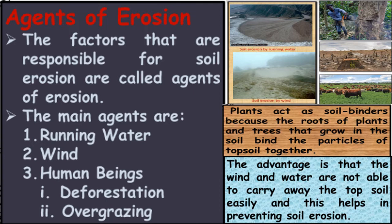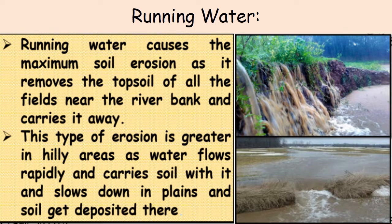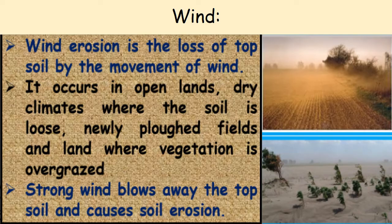Running Water. Running water causes the maximum soil erosion as it removes the topsoil of all the fields near the river bank and carries it away. This type of erosion is greater in hilly areas as water flows rapidly and carries soil with it, and slows down in plains where soil gets deposited.